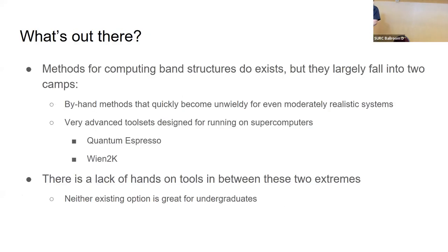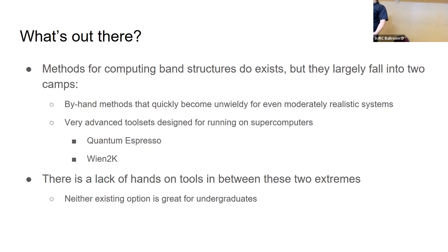How do we actually calculate a band structure? The old-fashioned method is pen and paper — set up a big matrix, find its eigenvalues for each band, which takes a while and is easy to make mistakes. Alternatively, powerful software packages such as Quantum Espresso or Wien2k exist, but they're designed to run on supercomputer clusters that typical undergraduates don't have access to. So undergraduates wanting to learn about band structures are stuck between a rock and a hard place with no good accessible option.